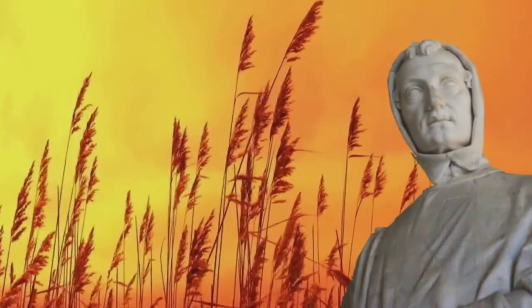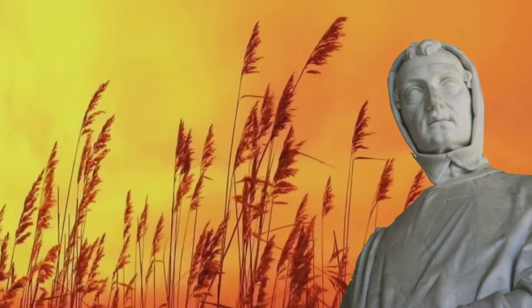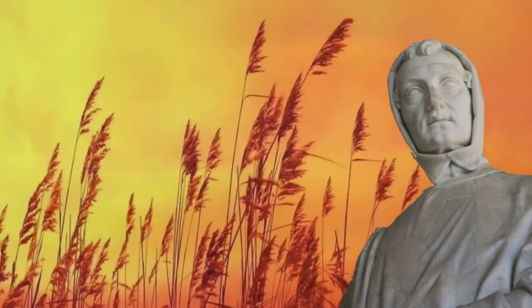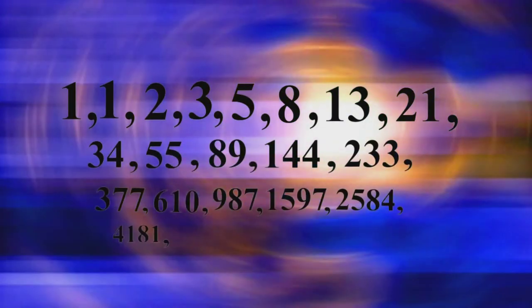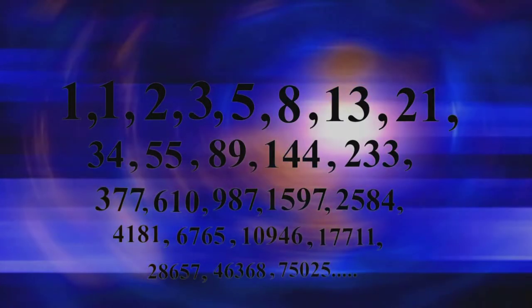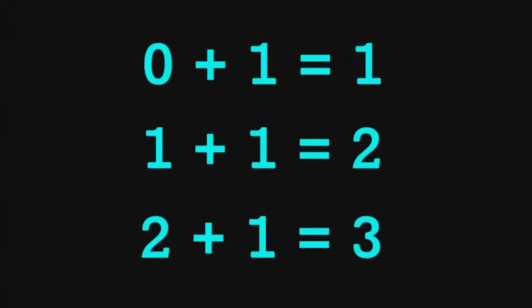Fibonacci discovered a number sequence that revealed a very interesting number pattern. The numbers began in the following sequence: 1, 1, 2, 3, 5, 8, 13, 21, 34, 55, and continued indefinitely. He obtained the sequence by adding the last two digits together.